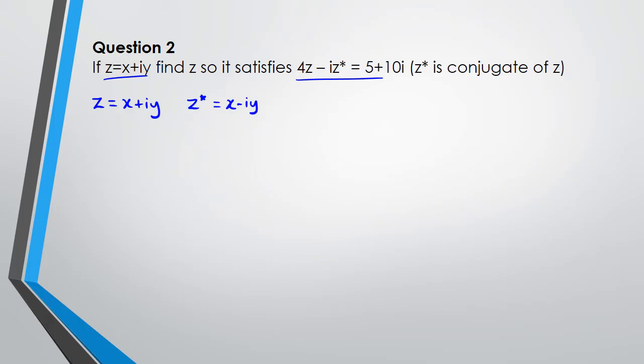So first off, z is x plus iy, then conjugate of z equals x minus iy, so we have 4 times z which is 4 times x plus iy minus i times z conjugate is x minus iy. And what we're going to do is we're going to simplify this and then equal to 5 plus 10i, so we can put it in here. So when we expand this we got 4x plus 4iy minus ix plus i squared y, and all that is equal to 5 plus 10i.